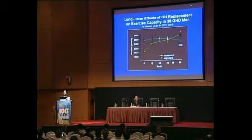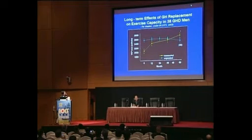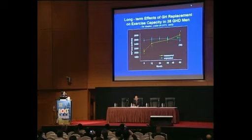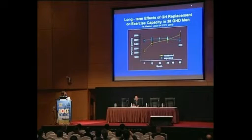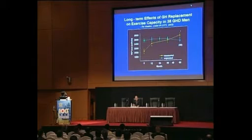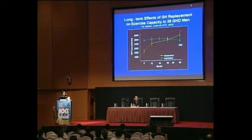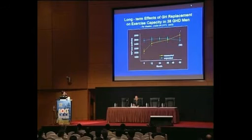Regarding effects on exercise capacity and physical fitness, a study from the same Dutch group shows a progressive increase over five years. The turquoise line shows what would be predicted for a similar group of men matched for age and weight followed over five years. As we all know, if we get older, our VO2 max sadly falls — it doesn't go up.